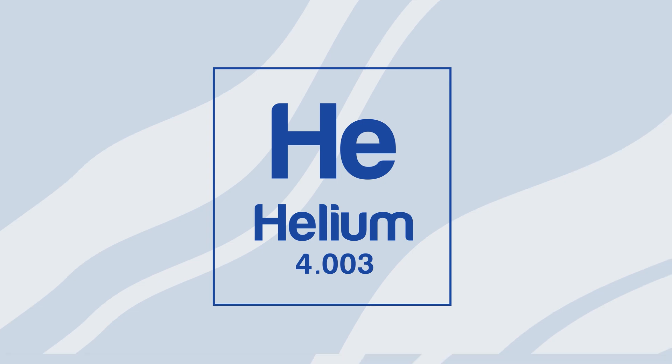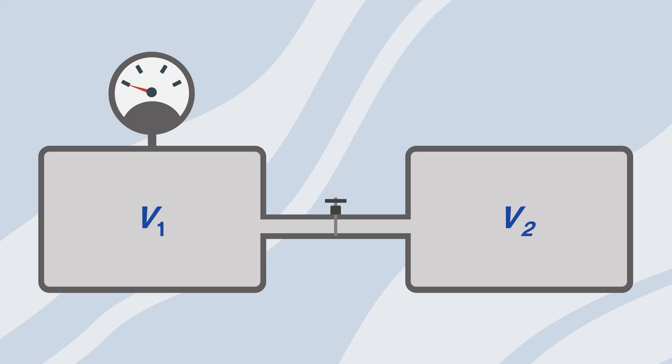We use the system shown here which consists of two chambers separated by a valve, with a pressure sensor connected to the first chamber. Chambers 1 and 2 should be of fixed volumes.